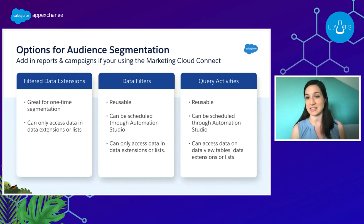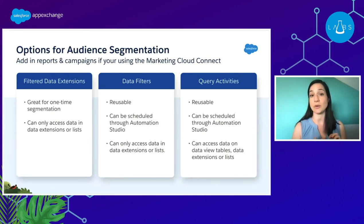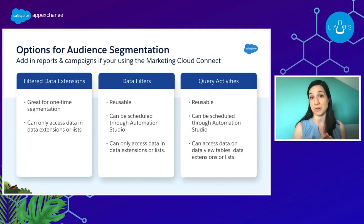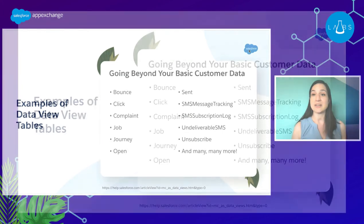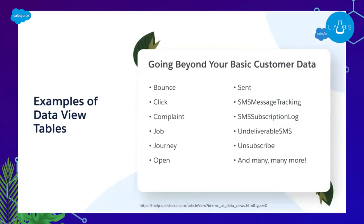That's where query activities come in. They're reusable like our data filters, they can be scheduled through Automation Studio, but there's one more thing we're going to be able to access — our data view tables, in addition to those data extensions and lists. Data view tables allow us to access data that we can't see through the UI or user interface in Marketing Cloud. You can log in and see a table of data as a data extension or on a list view, but you can never see the data living on a data view table.